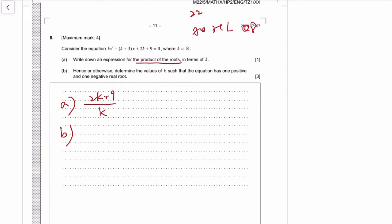Now let's deal with the part where they have to be one positive and one negative. It will mean the product of roots has to be negative, because if you have something positive times something negative, the product is negative. So this should be less than zero.